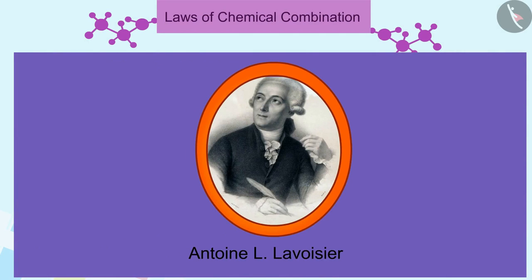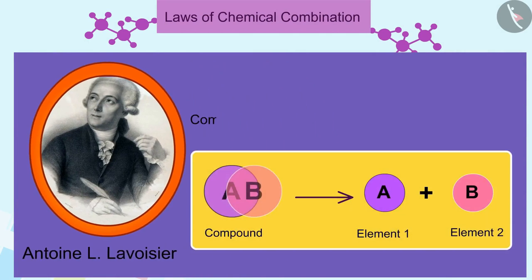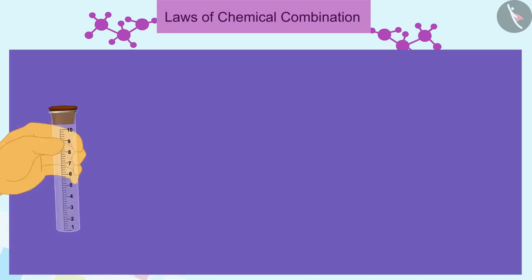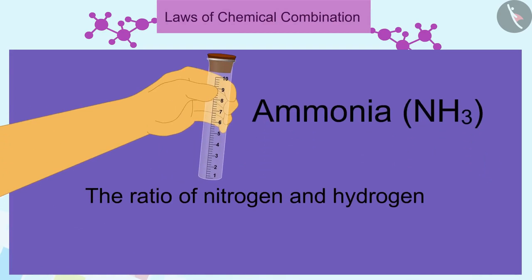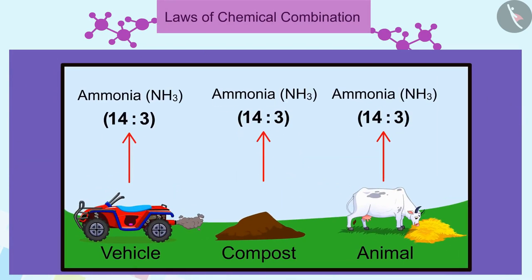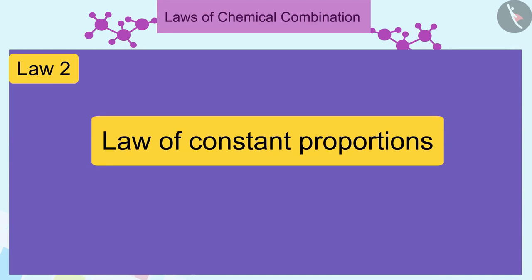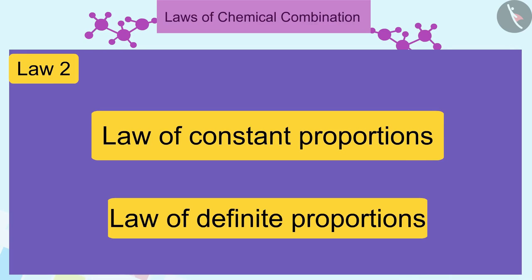Lavoisier along with other scientists noted that many compounds are composed of two or more elements and each such compound had the same elements in the same proportions, irrespective of where the compound came from or who prepared it. Let's take another example of this. If we take the example of ammonia, nitrogen and hydrogen are always present in the ratio 14 is to 3 by mass. Whatever the method or the source from which it is obtained. These examples explain the law of constant proportions, also known as the law of definite proportions.